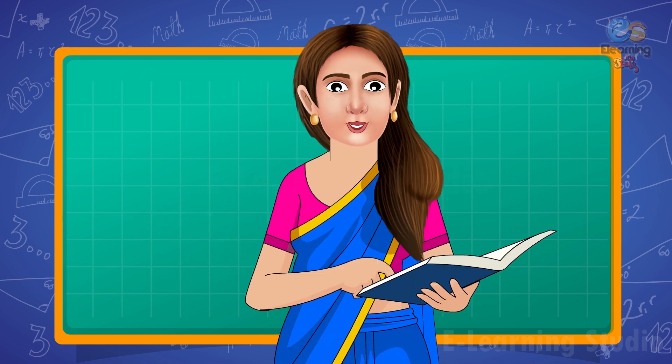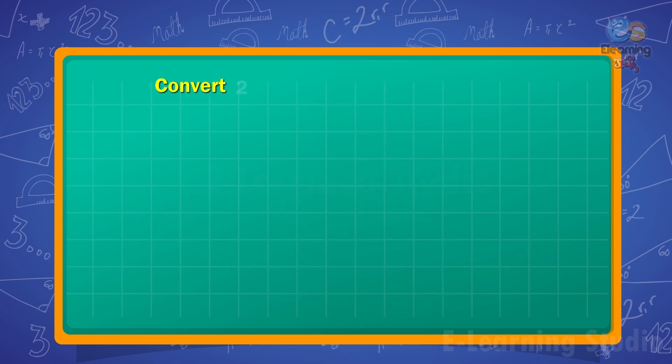And now, children, let's see the next example. Convert 2 and 5 upon 7 into an improper fraction. For this,